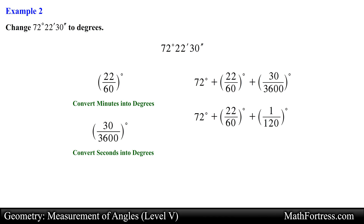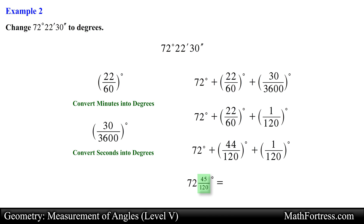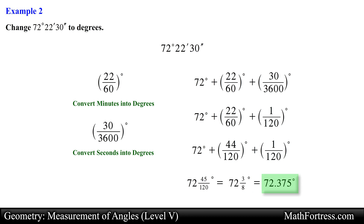We can add both fractions by finding a common denominator and rewriting the fraction representing the minutes. Adding the fractions we obtain the result, and then we reduce the fraction to get 72 and 3/8 degrees, or 72.375 degrees. This is our final answer.